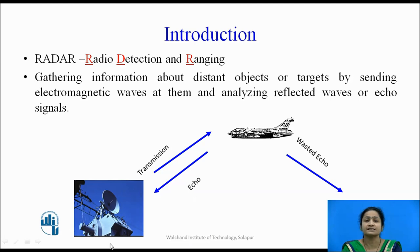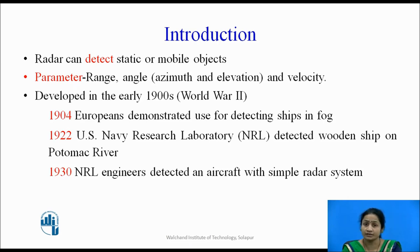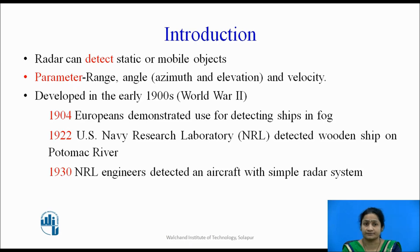The transmitter and the receiver are placed at the same location, as we observe in this figure. The radar can detect both stationary as well as mobile — that is, moving — objects. The parameters which can be determined using the radar system are: the range of the target, the angle at which the target has been placed, and if it is a moving target, the velocity at which the target is moving.